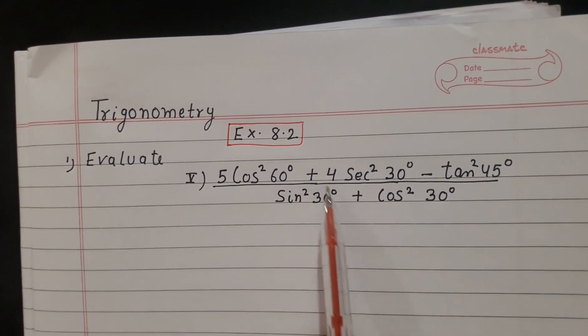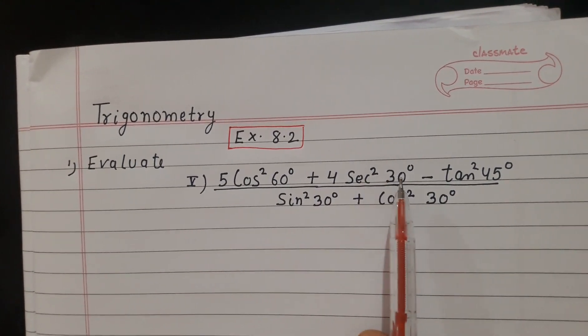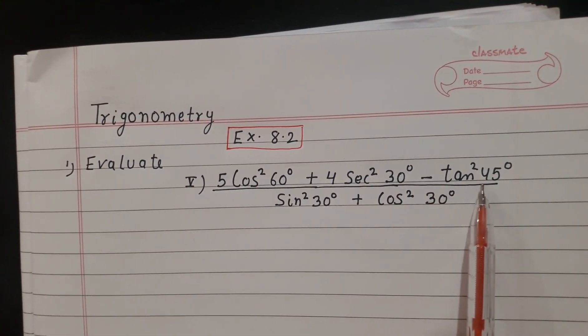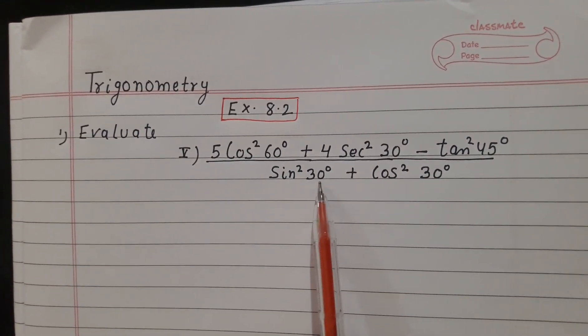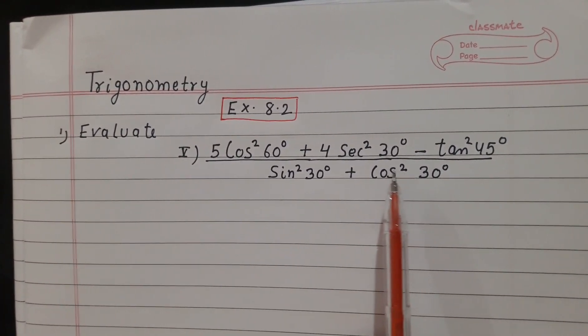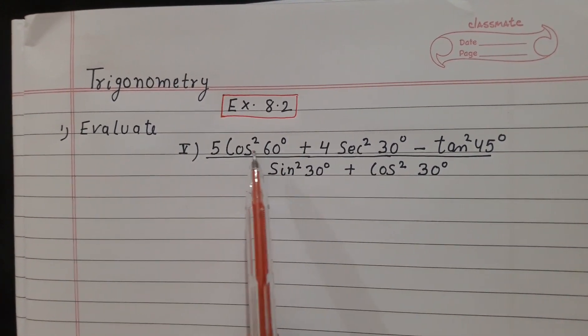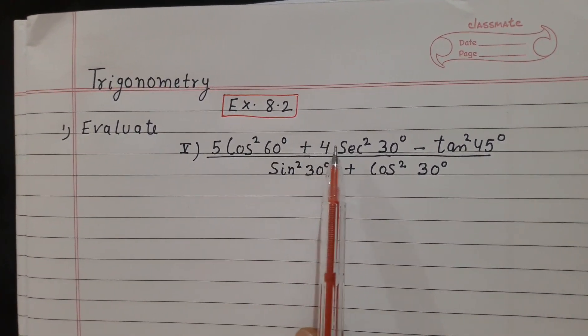Question number 1, part 5 is: 5 cos² 60° plus 4 sec² 30° minus tan² 45° whole divided by sin² 30° plus cos² 30°. For solving this question, we have to find all the trigonometric values.